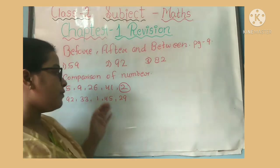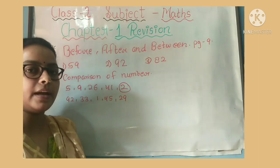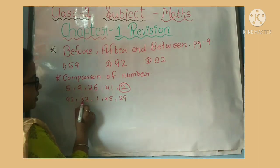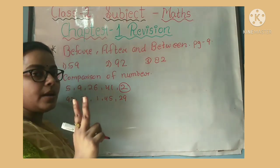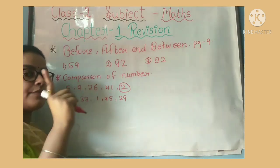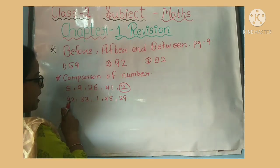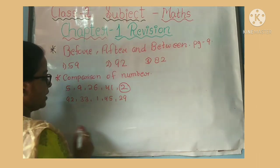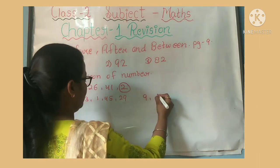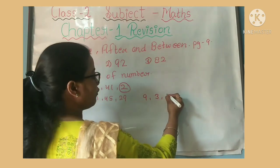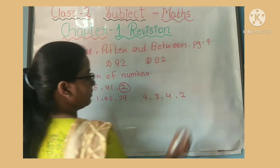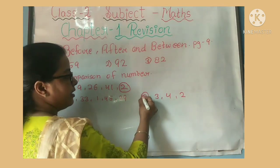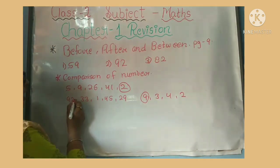When the biggest number is 1 digit, it is the 2-digit number. Let's see: 9, 3. When we compare two digits, first we compare the first digits. 9, 3, 4, 2. The biggest first digit is 9. So the greatest number is 92.